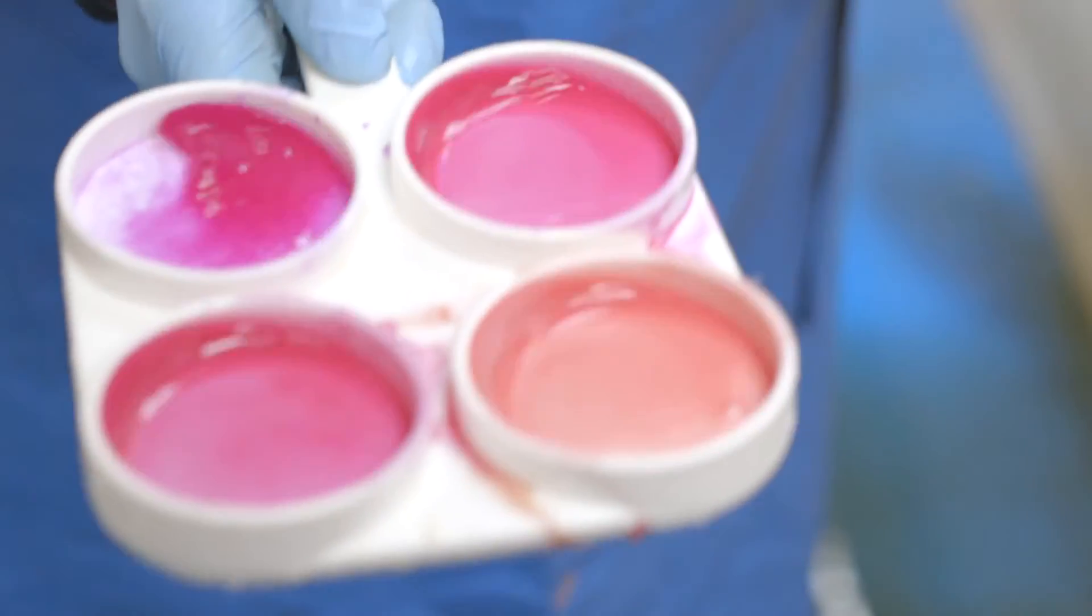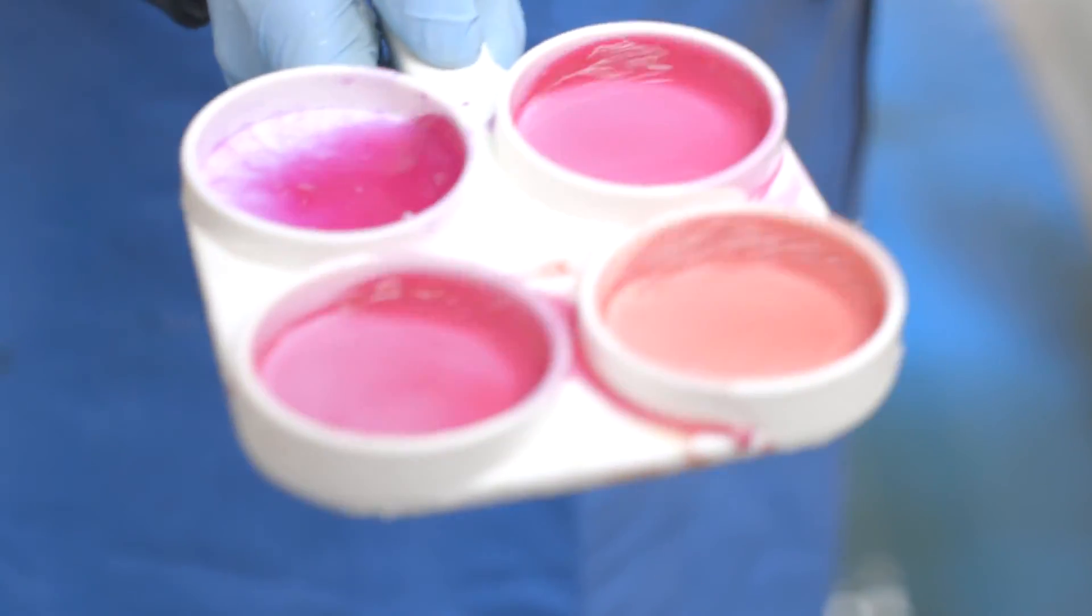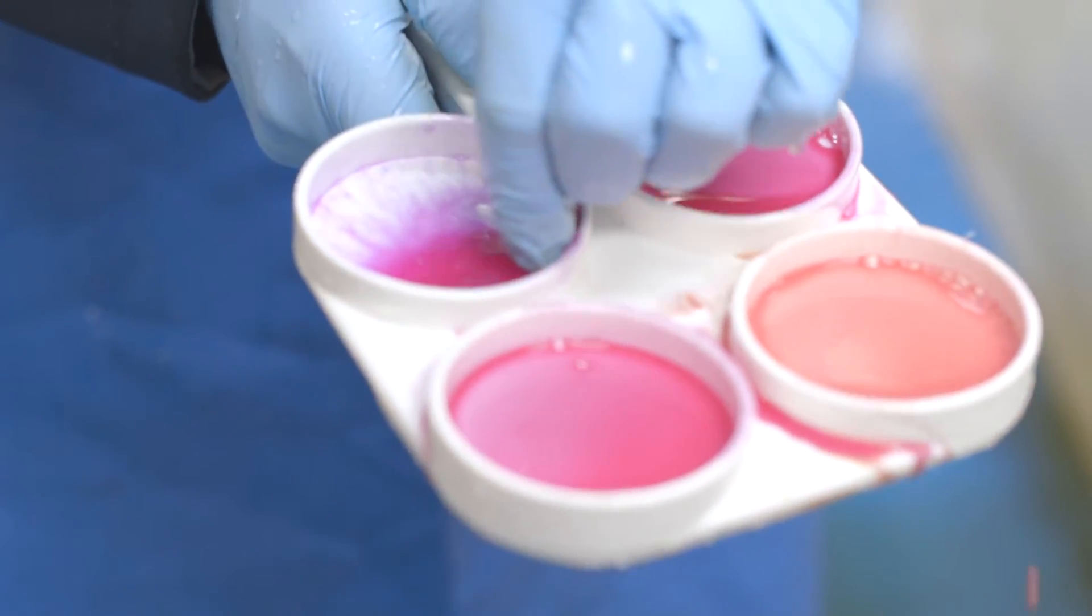High somatic cell count milk will cause a thickening of the mixture, and with a strong positive result it will thicken to a gel.